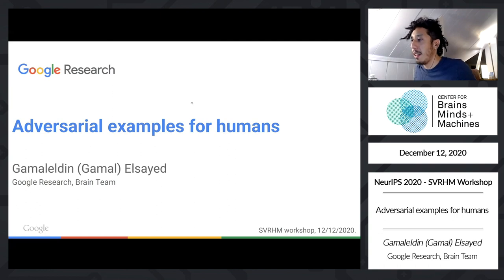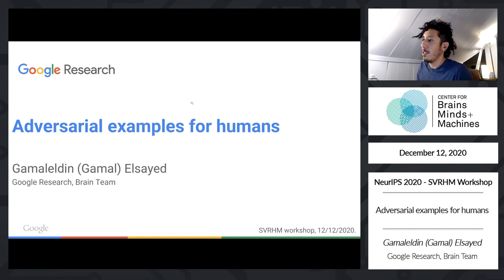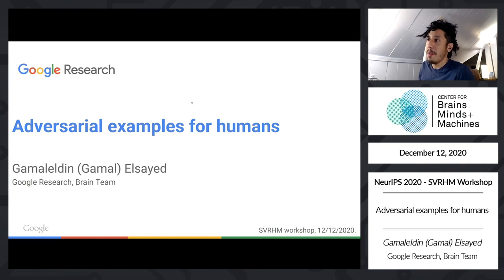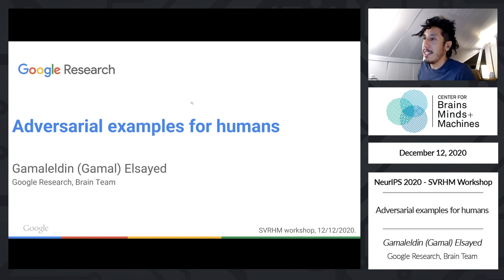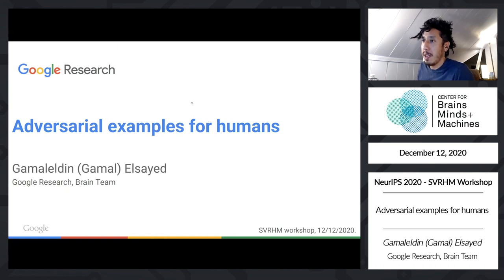Our next speaker is Gamal Eldin El-Sayed. He's a researcher at Google Brain, finished his PhD at Columbia University in theoretical neuroscience, originally from Egypt. Previously I introduced a math Olympiad winner; Gamal is actually an Olympic athlete in fencing, representing Egypt. So an interesting combination. Gamal, please feel free to take it away.